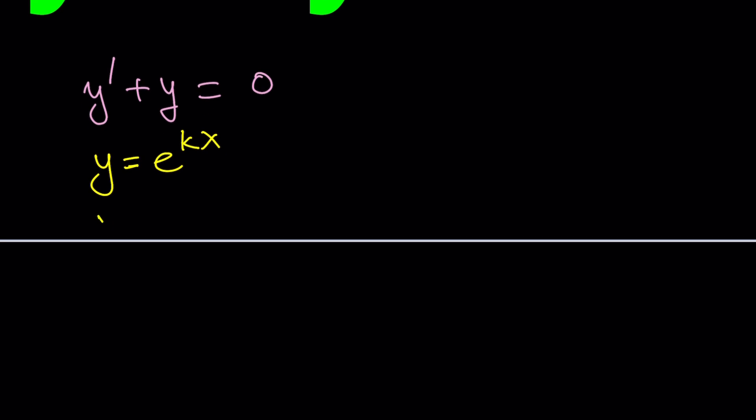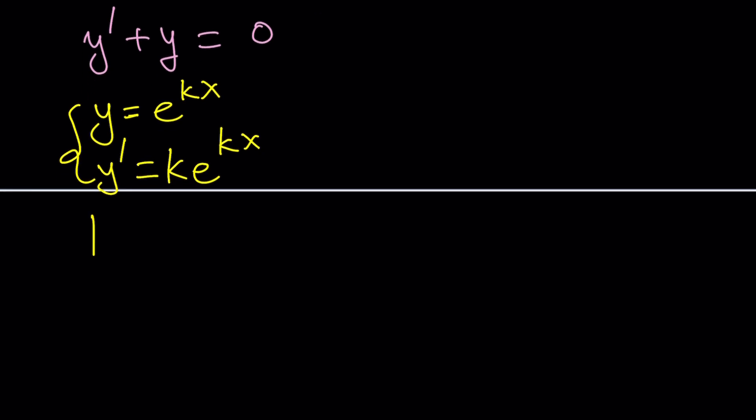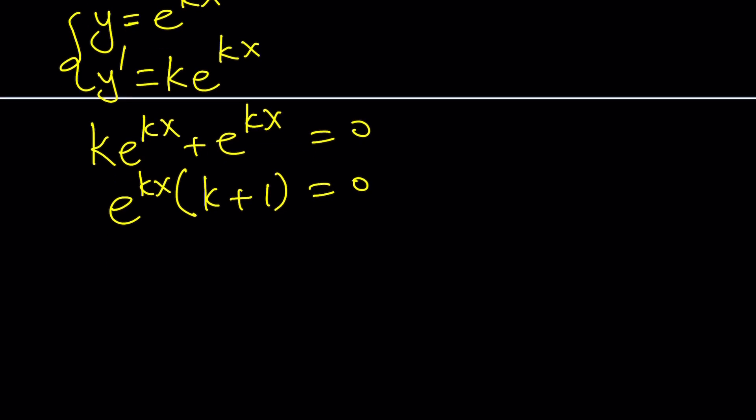When you plug in this, first I'm going to find the derivative. How do you differentiate e to the power kx? You take the derivative of kx, which is k, and then multiply by the same thing. Easy, right? The exponential function, there's a rule for that. Now we'll plug these in. This gives us k e to the kx plus e to the kx equals zero. Then we'll take out e to the kx. That gives us k plus one equals zero. We know that e to the kx can never be zero. So we have k plus one equal to zero, which means k is equal to negative one.